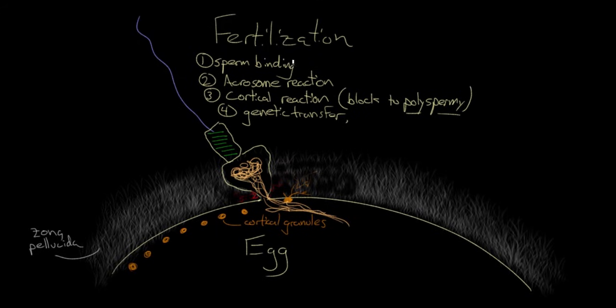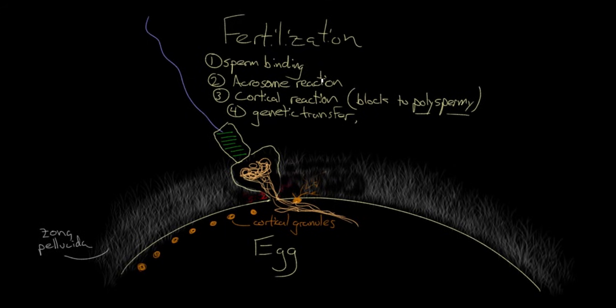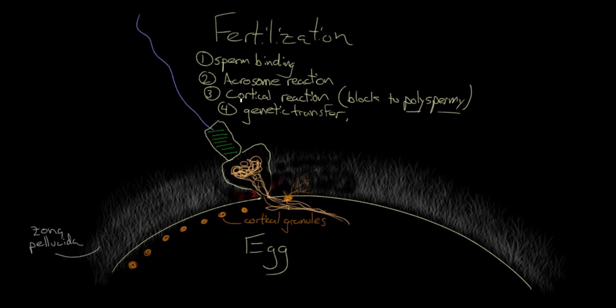Sperm binds to the zona pellucida glycoproteins. You have an acrosomal reaction and then a cortical reaction prevents more than one sperm getting in. And then the genetic material of the sperm is transferred.